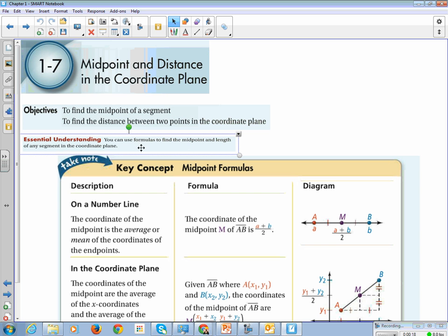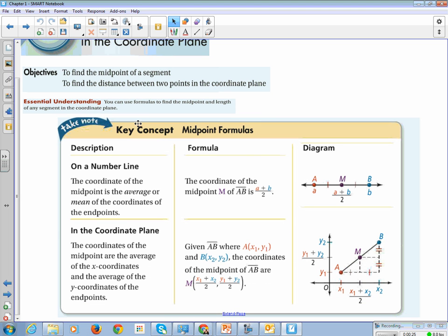We are definitely going to use formulas to find the midpoint and the length of any segment in the coordinate plane. I love the midpoint formula because all it is is your x-coordinates added together, divided by 2. That's your x-coordinate of your midpoint. And then your y-coordinates added together, divided by 2. And then on a number line, it's just the coordinate of the two added together and divided by 2.